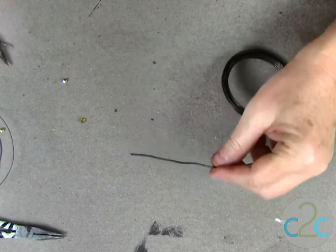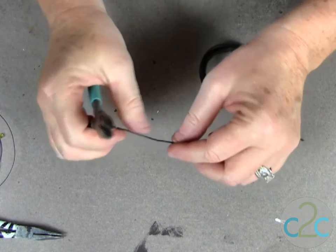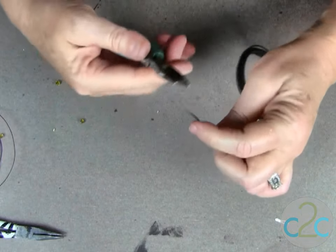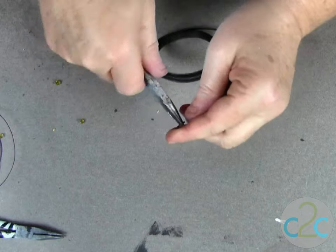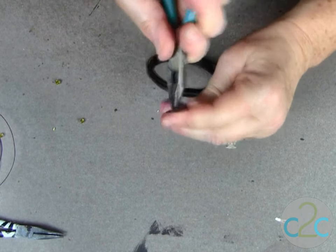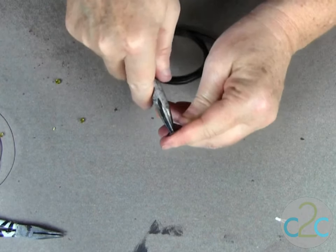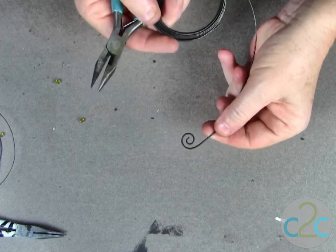So we're going to work with the thicker gauge wire, the 20 gauge wire, right off of the spool and I'm going to begin by making a small coil. Like that.